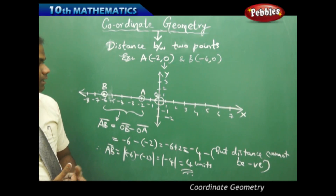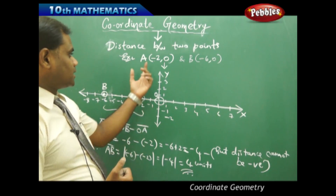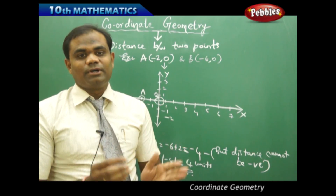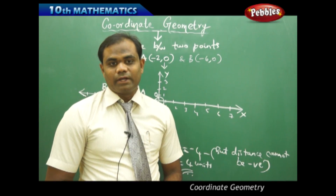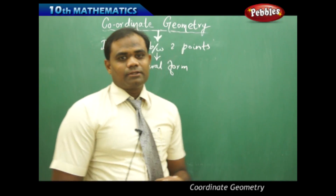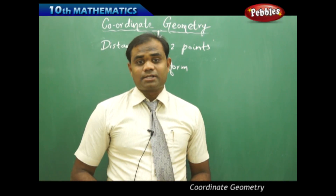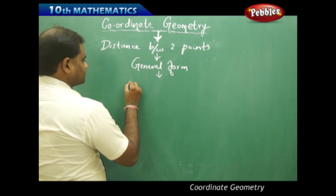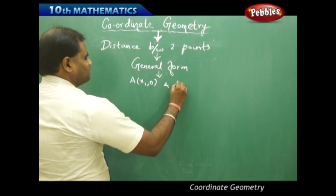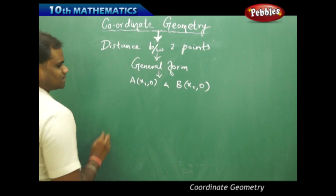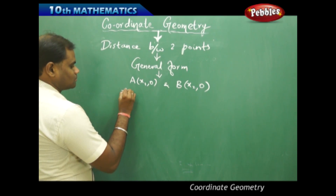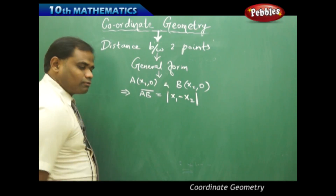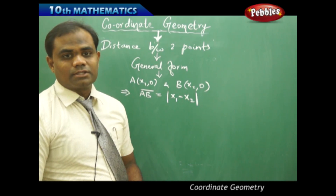So what is the conclusion from these two example problems? When I take coordinates (x1, 0) and (x2, 0), the distance between two points is mod(x1 minus x2). The modulus is used because distance cannot accept negative values. We conclude with the general form: if A = (x1, 0) and B = (x2, 0), then the distance AB = mod(x1 minus x2) or mod(x2 minus x1) — either way gives the distance.